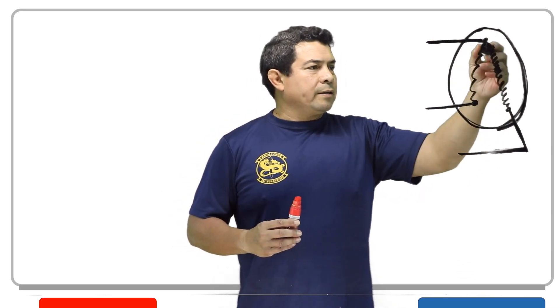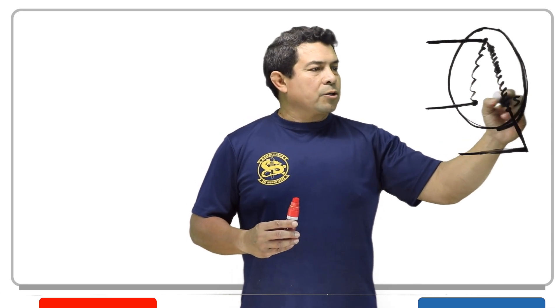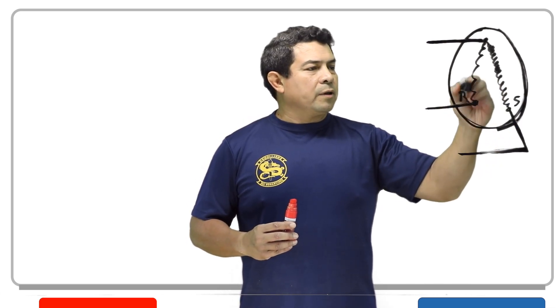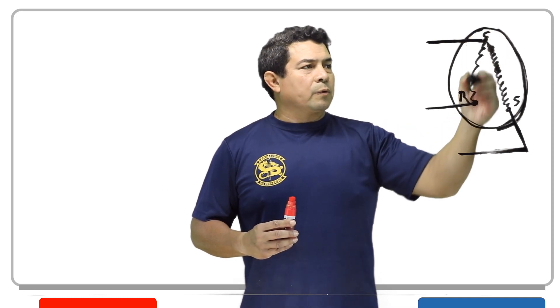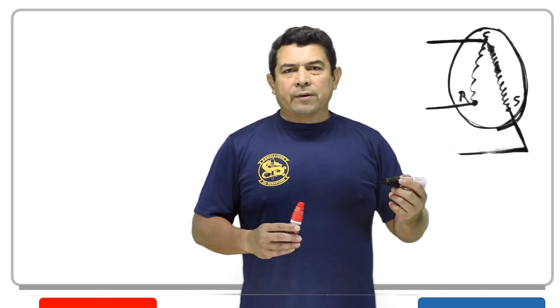Now on this one, we see that this one has more windings on it. Because of that, this is going to be our start winding. This will be our run winding. And this is common to both the run and the start. Because it's common to both, we call that your common connection.